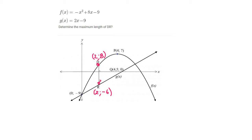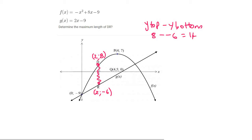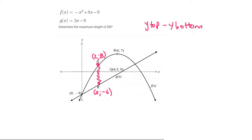Then how would you find this length? Well, you could take the y value of the top point minus the y value of the bottom point. That would give you 8 minus minus 6, which is almost like saying 8 plus 6, which is 14. So this y-top minus y-bottom is very important to remember — it will always give you the length, but always make sure it's top minus bottom.